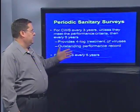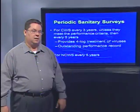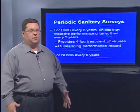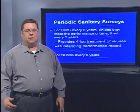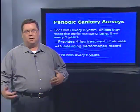Number one is the periodic sanitary surveys, or CCIs as we call them here in Texas. For community water systems, those typically will be done every three years, unless they meet specific performance criteria — specifically that the system provides four-log activation of viruses and has an outstanding performance record. For non-community water systems, the period for sanitary surveys is every five years.